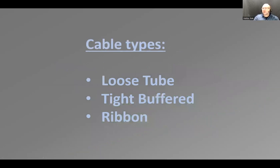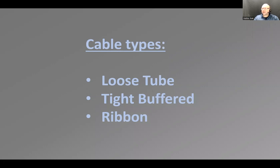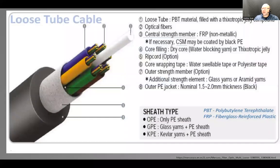Today we're going to talk about three things — plus a bonus. We're going to cover cable types: loose tube, tight buffered, and ribbon. We'll also talk about the three or four typical signal wavelengths used for fiber transmission, and why those specific ones are used rather than others.